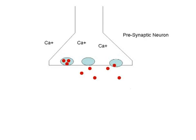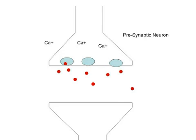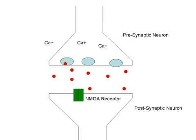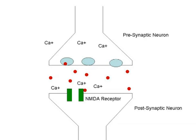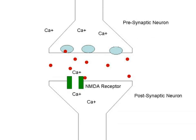The presence of calcium triggers the release of glutamate into the synaptic cleft. Glutamate stimulates calcium-permeable NMDA receptors on the postsynaptic neuron, which open to allow calcium into the cell.